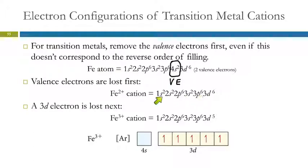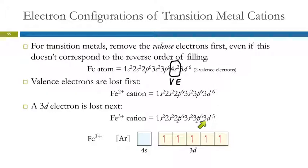So if we're making the Fe²⁺ cation, we remove the 4s electrons. The electron configuration does not include 4s⁰ — if there aren't any electrons in that level, you just don't write it. If iron loses one more electron to make Fe³⁺, that comes out of the 3d, giving us 3d⁵. The 4s is empty and the 3d is half-full.